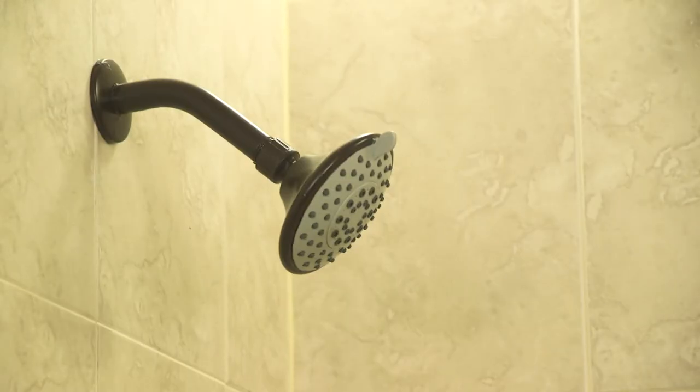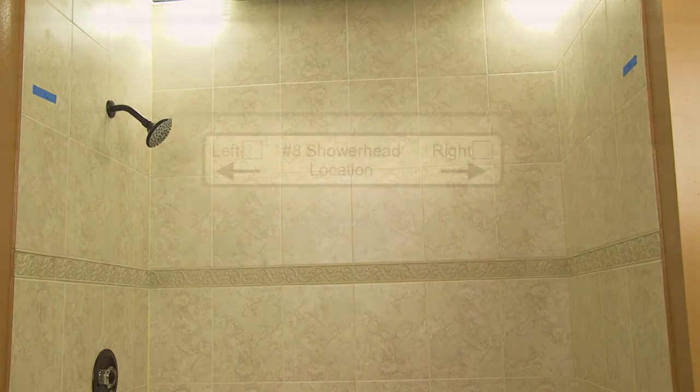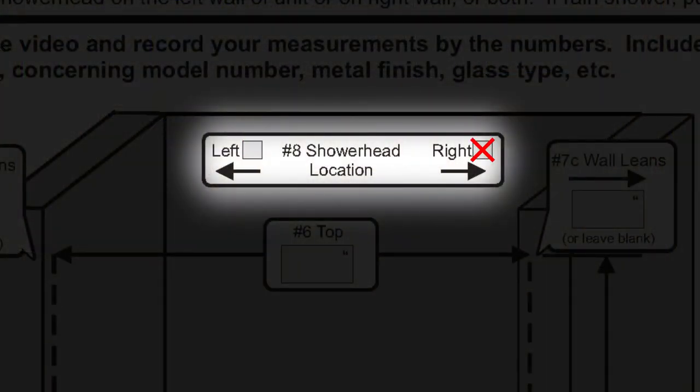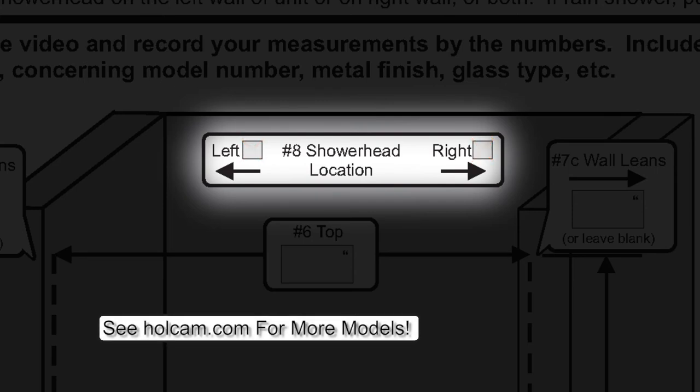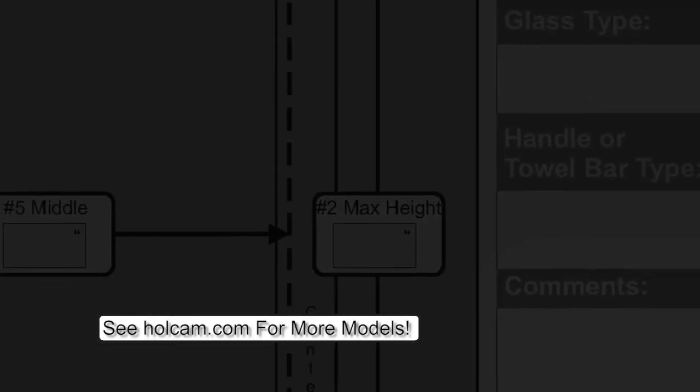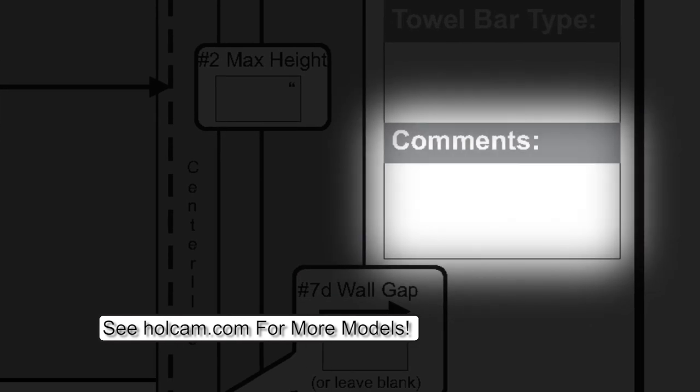Finally, indicate in box number 8 where the shower head is located. Check left or right. Check both if you have opposing shower heads. Leave blank if you have a rain shower, but put a note about it in the comments box on the right side of the Holcomb measuring sheet.